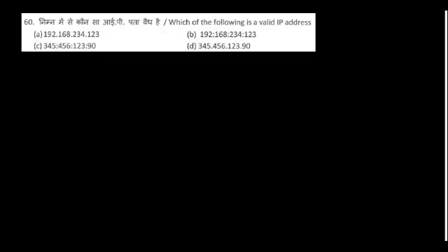Which of the following is a valid IP address? Some options use colons — those are wrong. The maximum value in each octet must be checked. I have a little doubt about one option; if you find it wrong, please comment so I can update it.